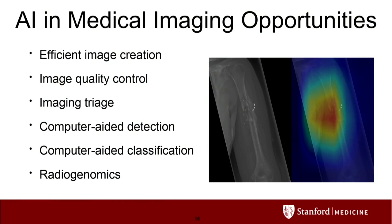The opportunities in this space include efficient image creation, image quality control — detecting when a patient moved and images aren't good before they leave, avoiding repeat scans — and triage. I get 100 ICU films every morning; five might have a tube out of place or pneumonia. It would be nice for those to pop to the top of the stack so I look at them right away. Computer-aided detection would help with cases like the one I showed earlier. Computer-aided classification helps a radiologist out of their comfort zone — if I see something in the bone, it would be nice to show a differential diagnosis and similar cases. And radiogenomics — correlating images to genomic signatures, like Brad Erickson's work.